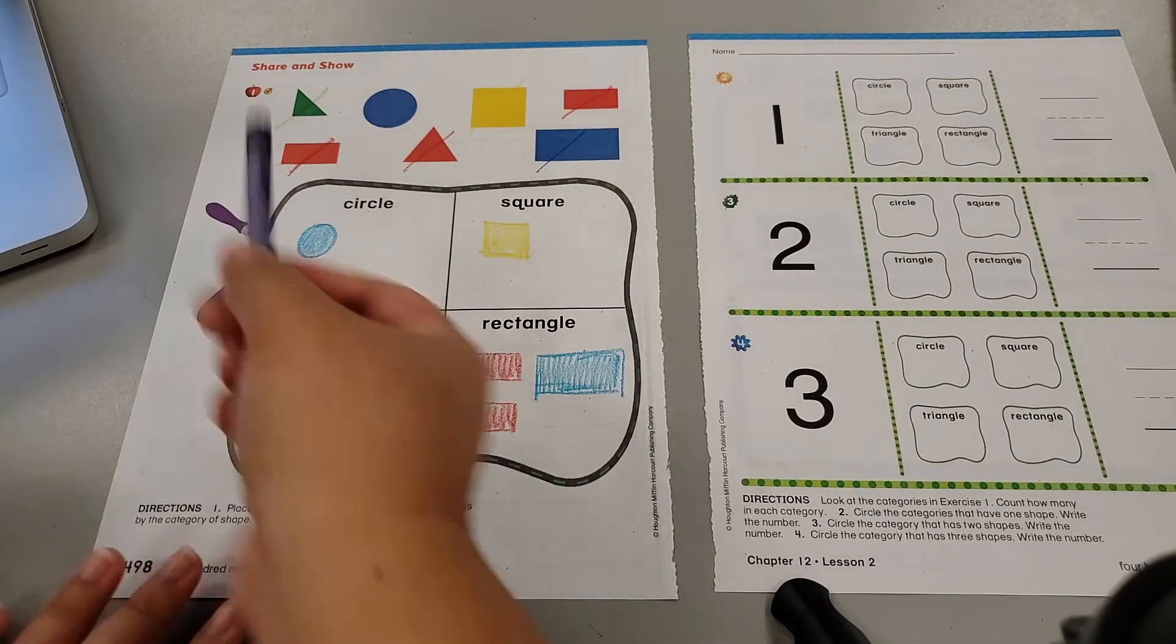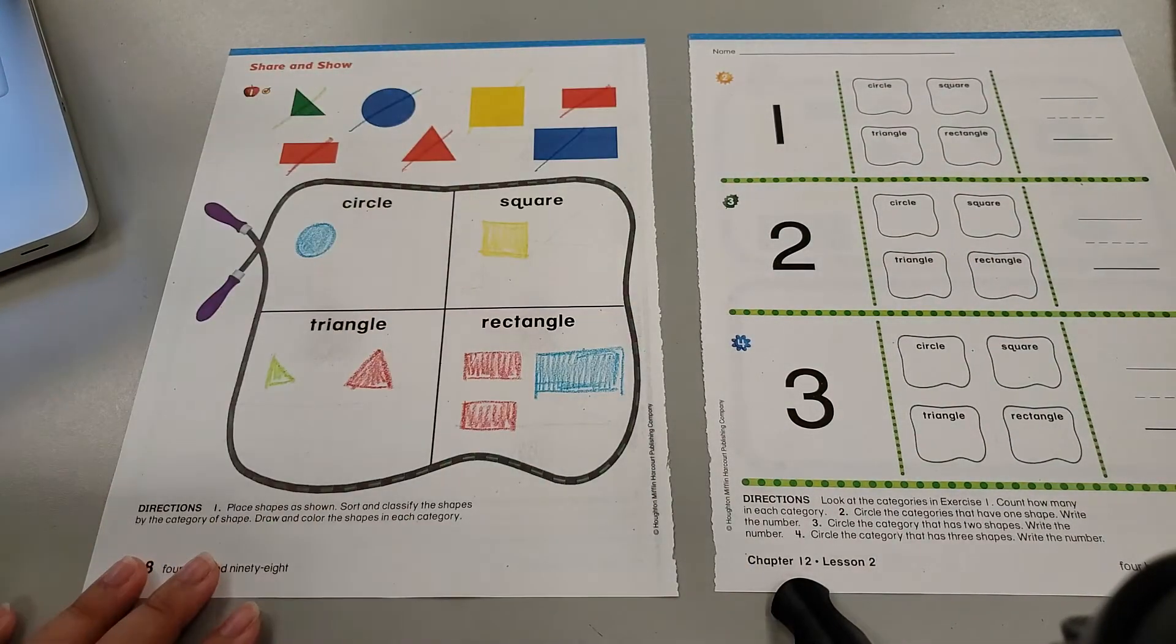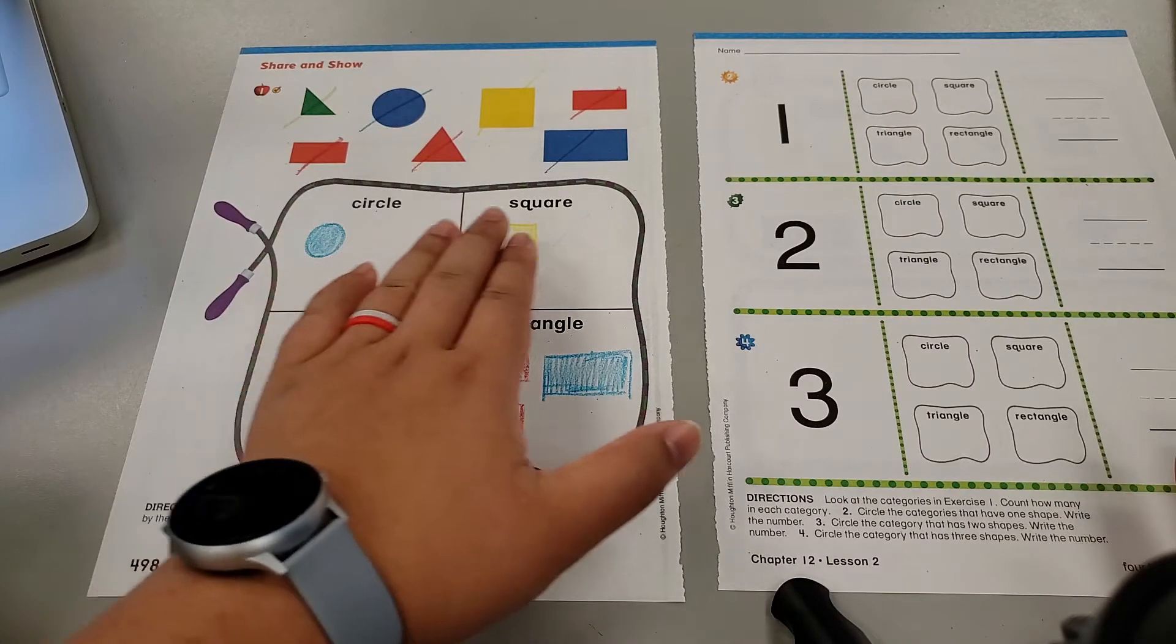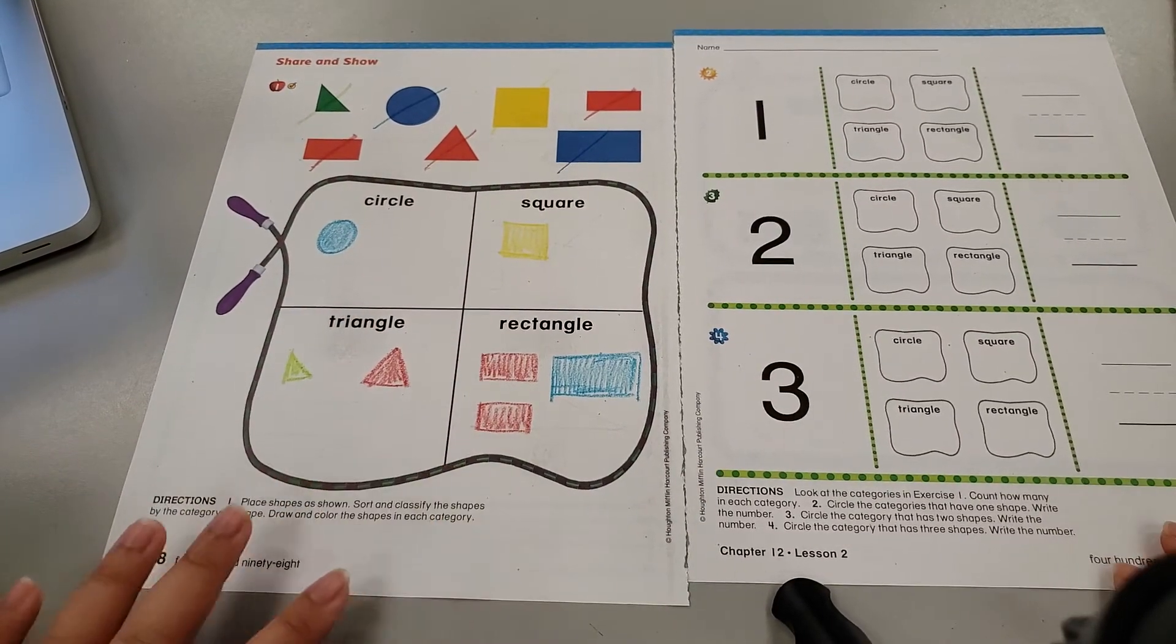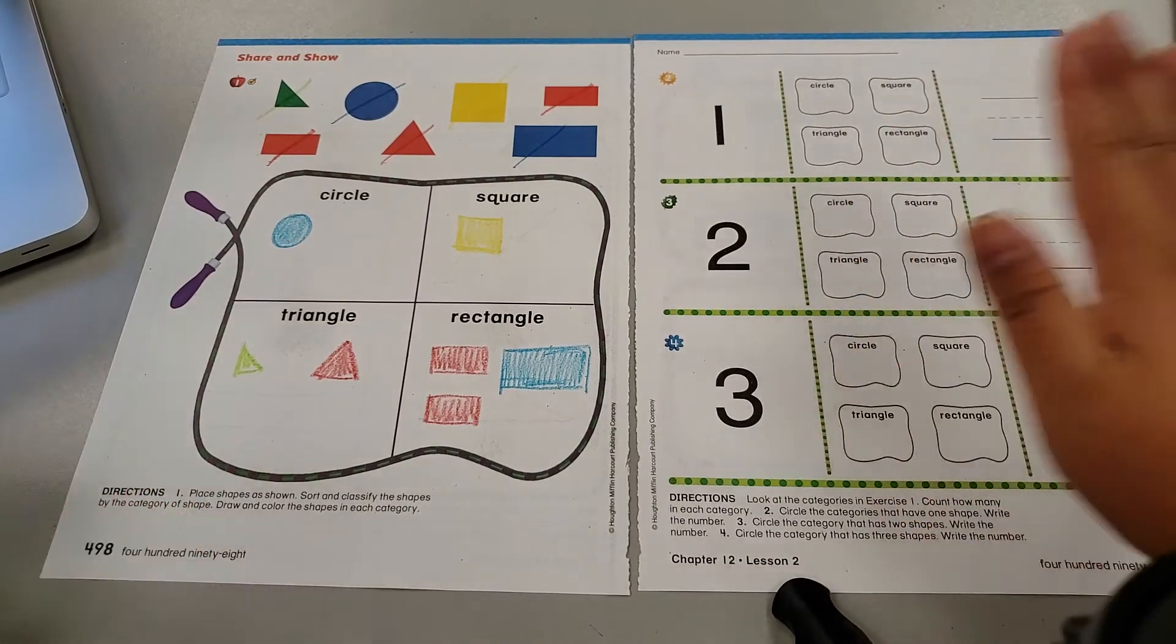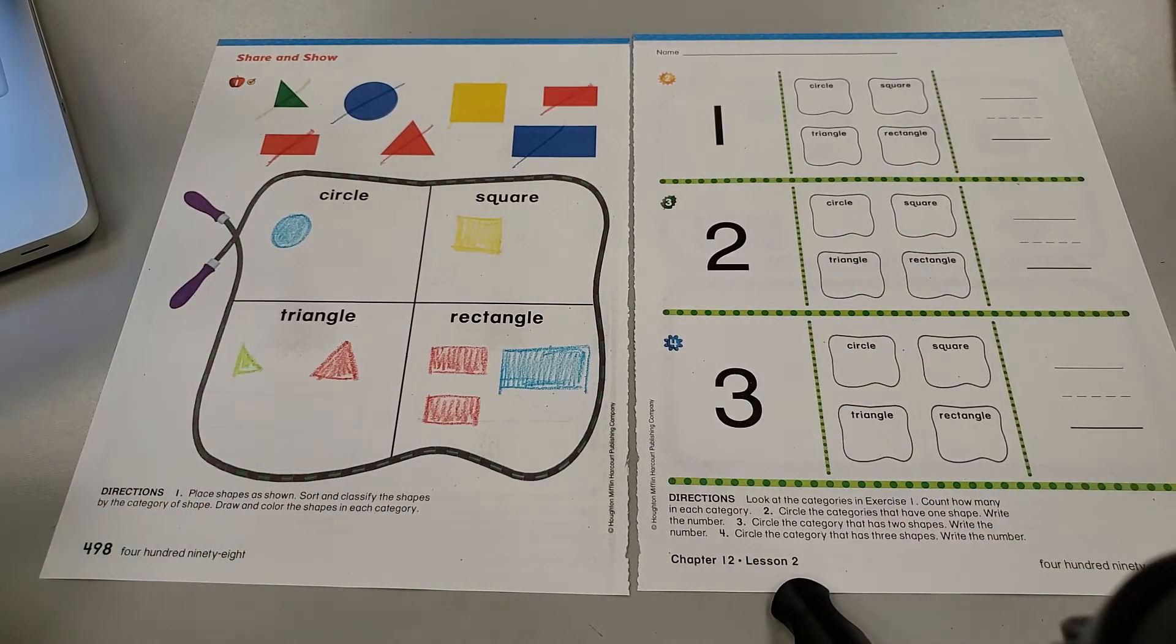Is that all the shapes? Oops, I didn't cross out my circle there. All right. So all of my shapes have now been sorted. This information will help me finish the work on the next page.